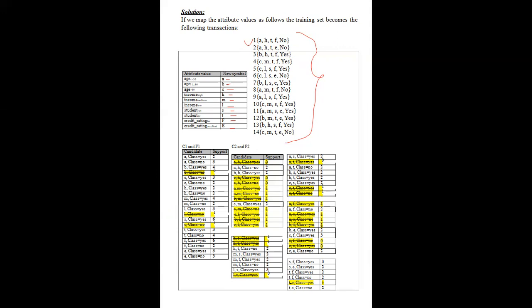After getting this transactional dataset — like your itemset format — the new thing is that every transaction record has a class label. Now you can apply the Apriori algorithm to find the frequent itemset. You know how to generate the candidate set and the final frequent set from it. C1 and F1 are used to calculate the one-itemset, then two-itemset, then three-itemset and so on. For every itemset — one-itemset, two-itemset — every item is along with the class label, because this is a supervised learning technique and we want every rule with the class label.